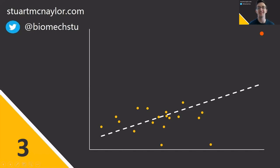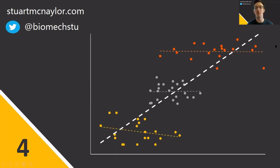Mistake number three is inferences based on spurious correlations. One example of where this might occur is through the presence of outliers distorting the overall relationship. Another way spurious correlations can occur is by pooling the data from two or more groups together.